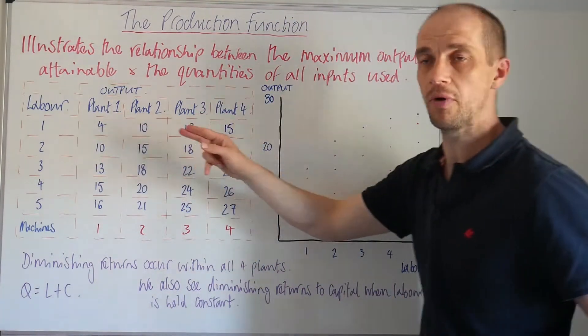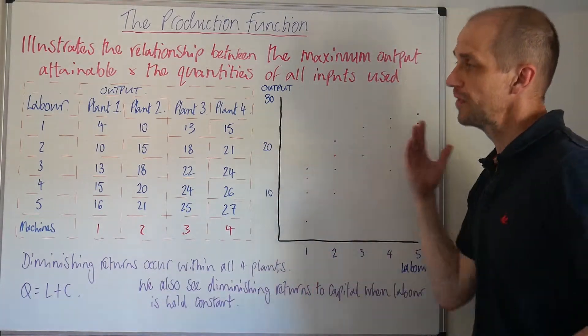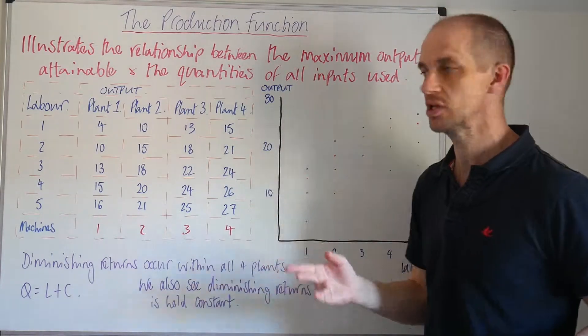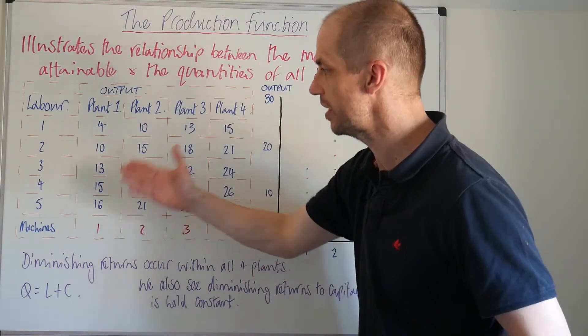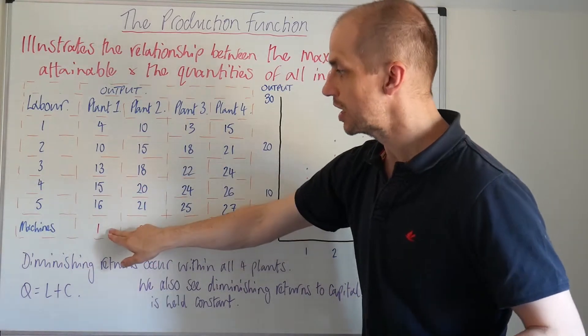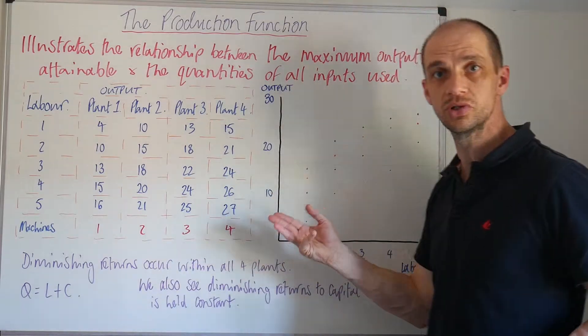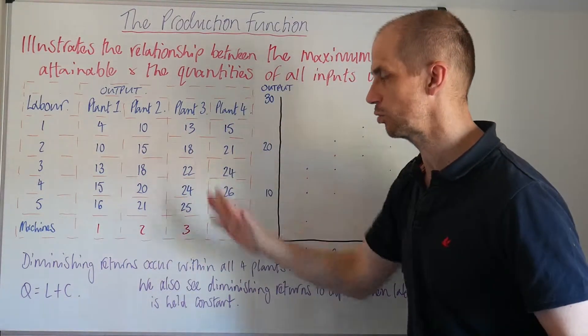So we can see that I've put down labor going through one to five here. Now meanwhile, we've got these different plants or different factories and the corresponding output levels that are possible within each plant given the actual capital inputs that are also used within each of those factories or plants.